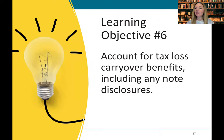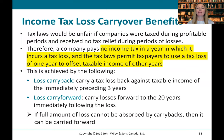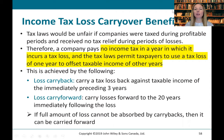Our sixth learning objective in Chapter 18 is to account for tax loss carryover benefits, including any note disclosures. It would be unfair if companies were taxed during profitable periods and received no tax relief during periods of losses. Therefore, a company pays no income tax in a year in which it incurs a tax loss — negative taxable income, not accounting income — and the tax laws permit taxpayers to use a tax loss of one year to offset taxable income of other years.